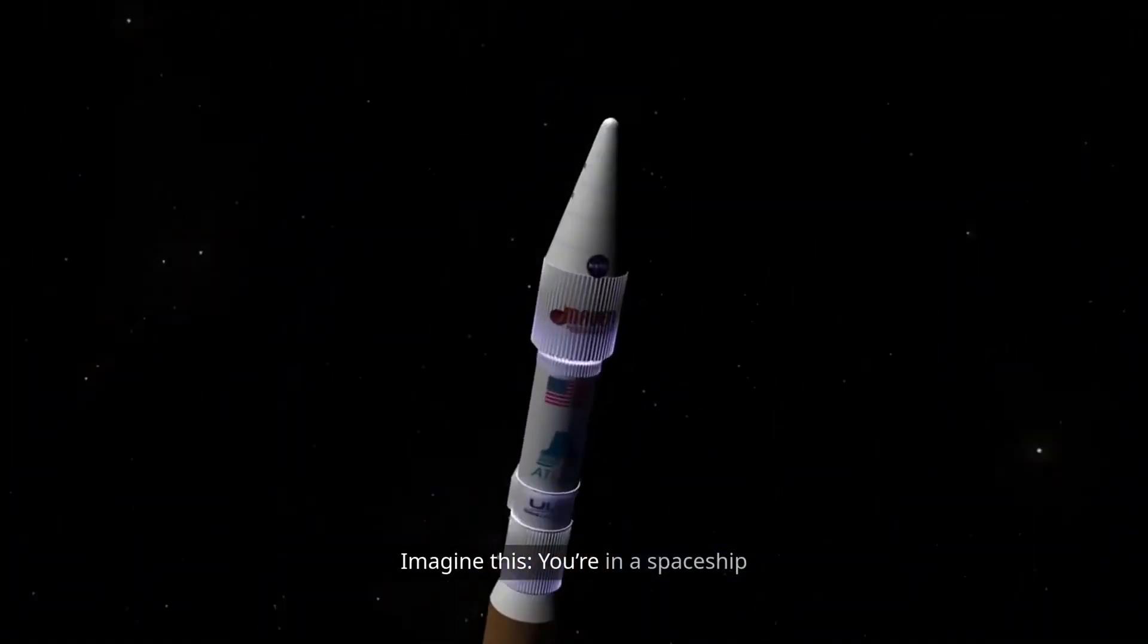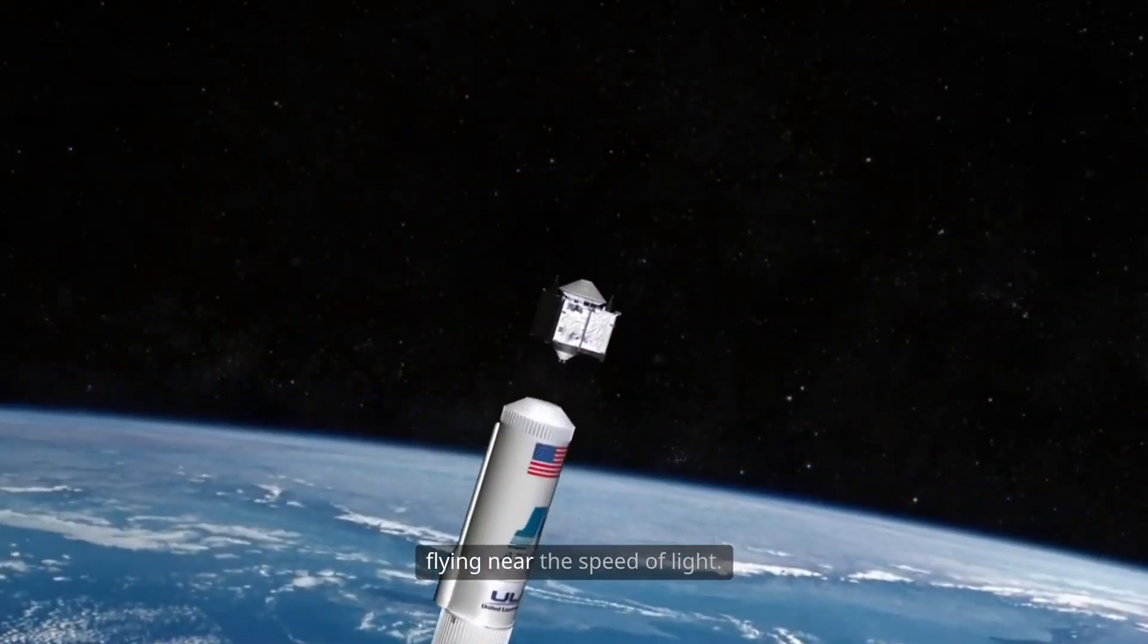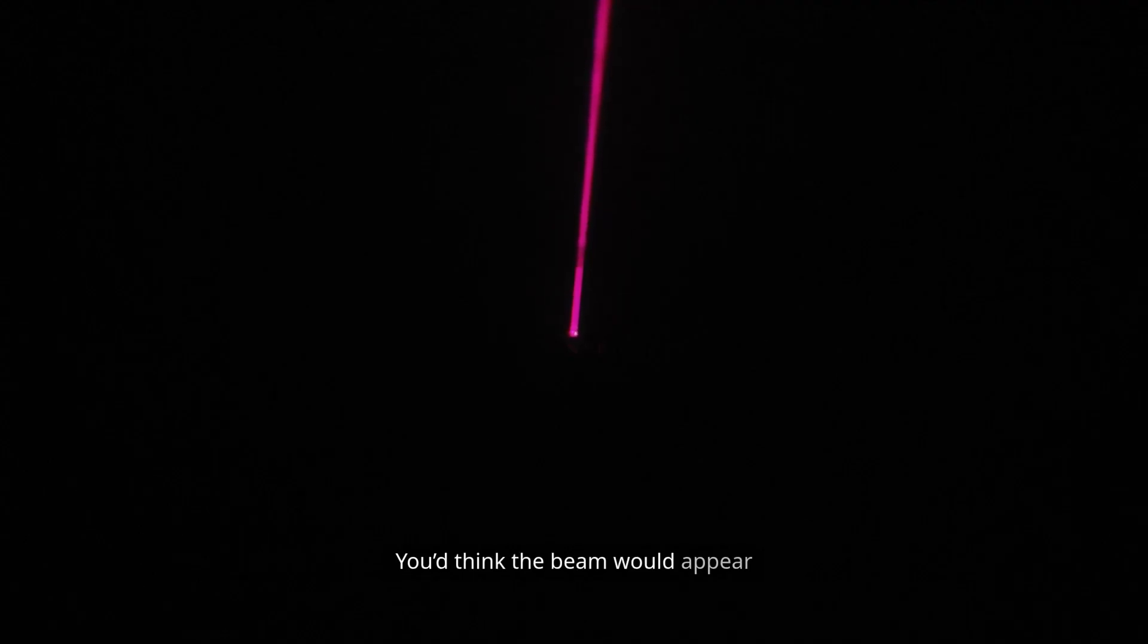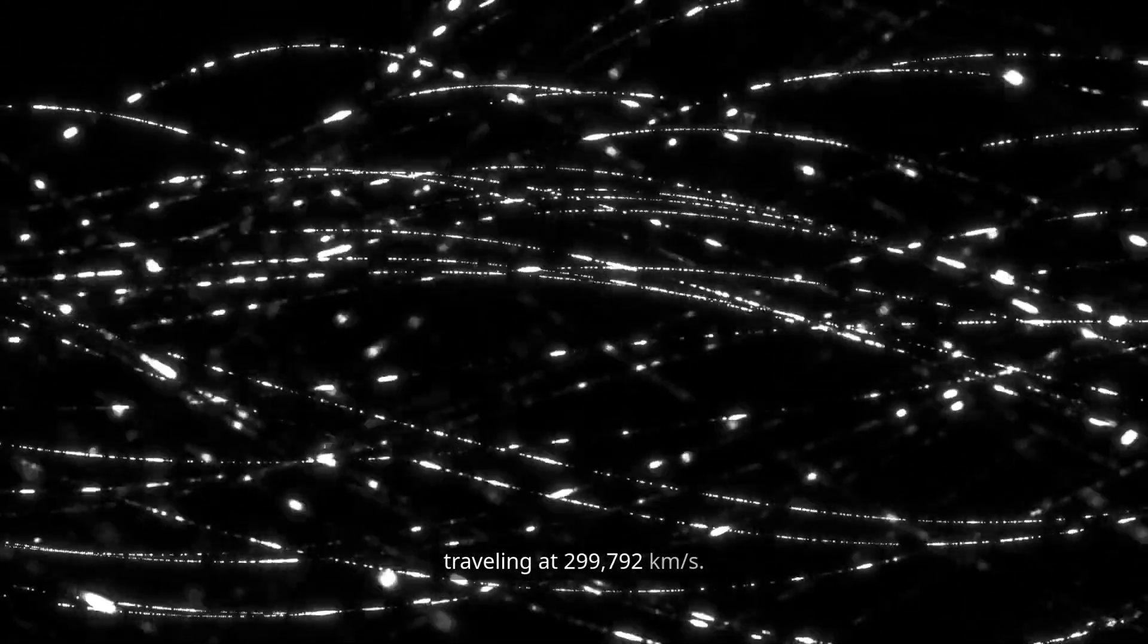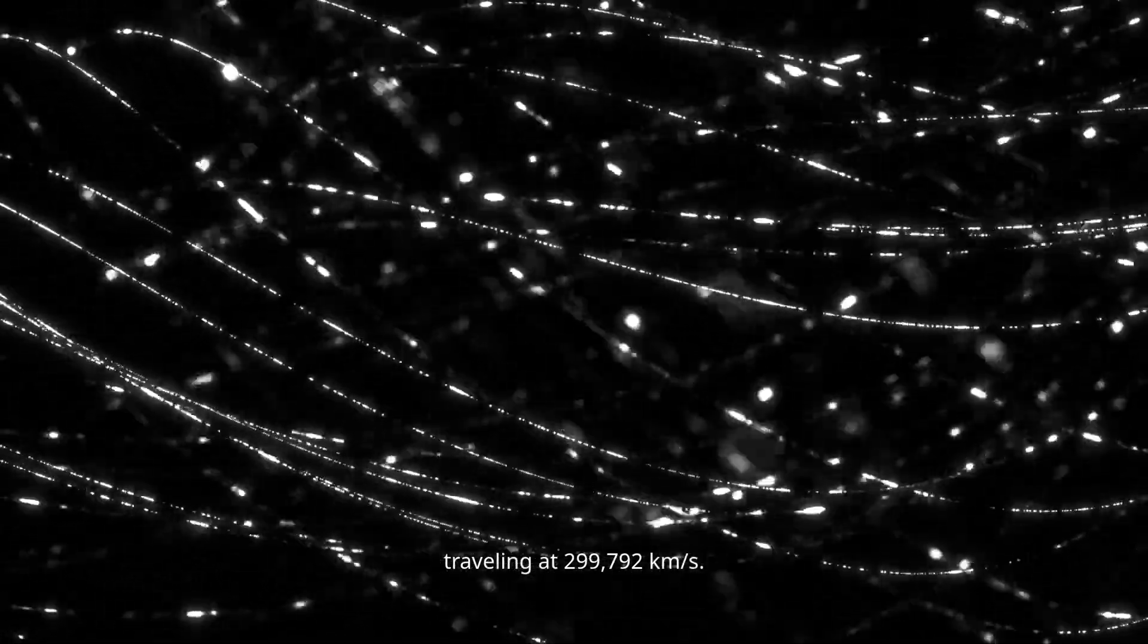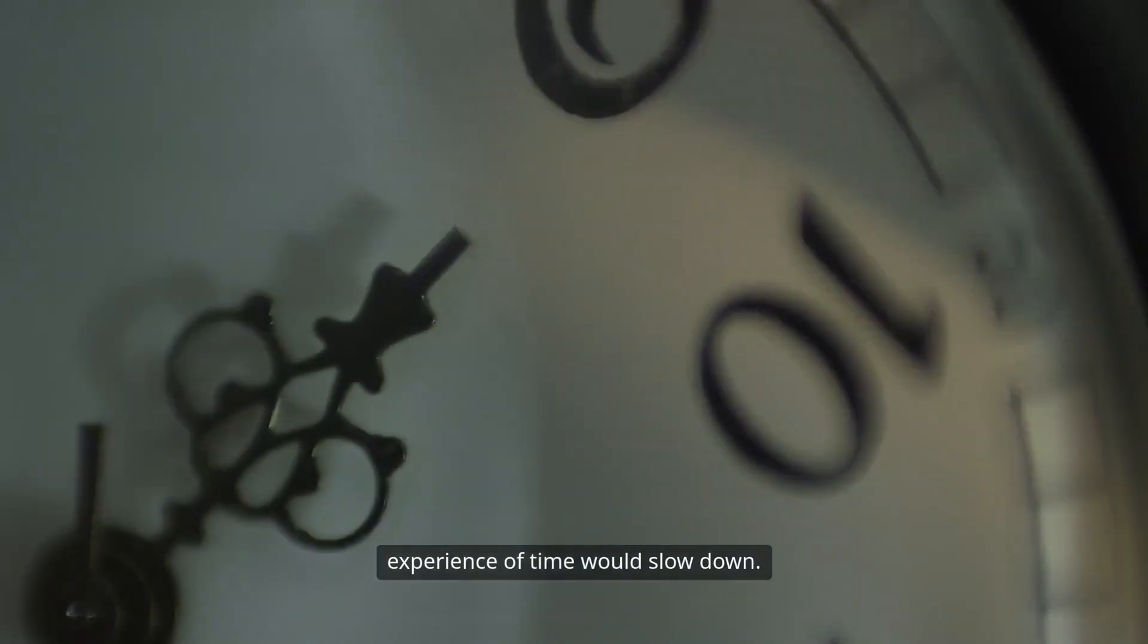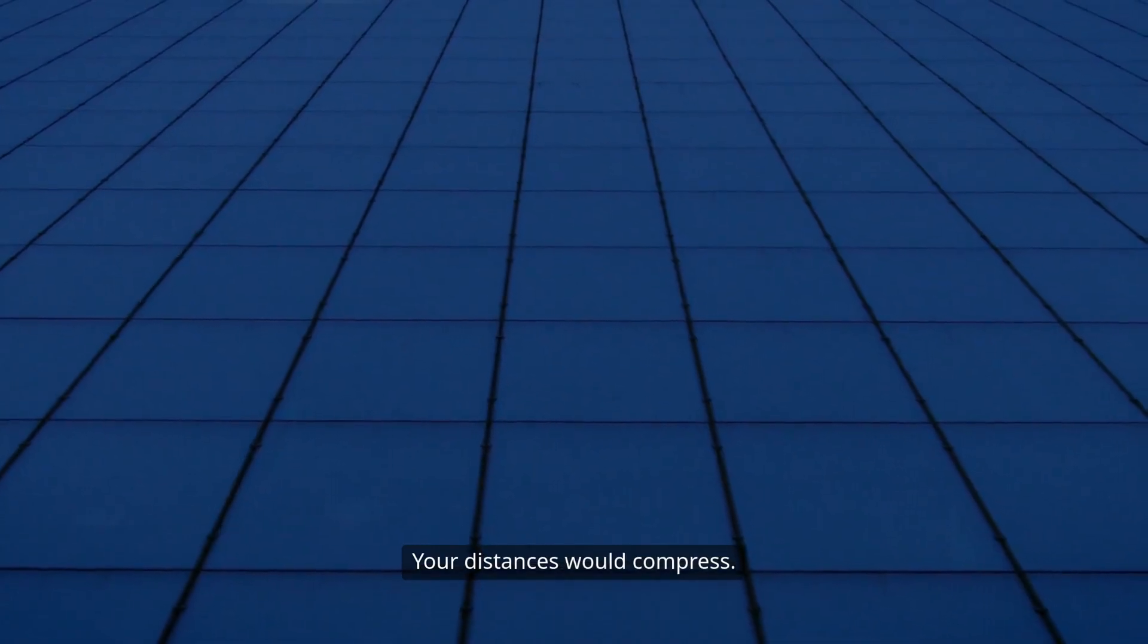Imagine this: you're in a spaceship flying near the speed of light. You shine a flashlight ahead. You'd think the beam would appear to crawl away from you slowly. But no, you'll still measure it traveling at 299,792 kilometers per second. To make that possible, your own experience of time would slow down.